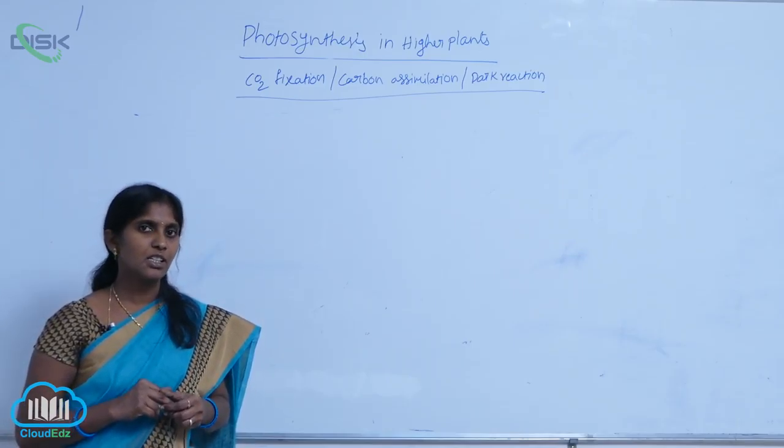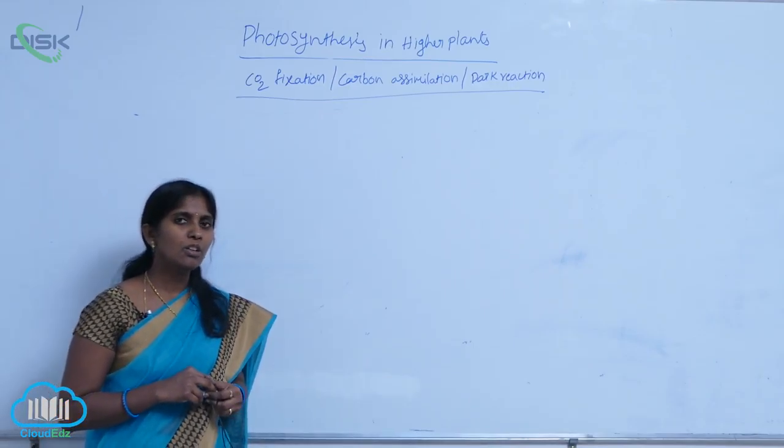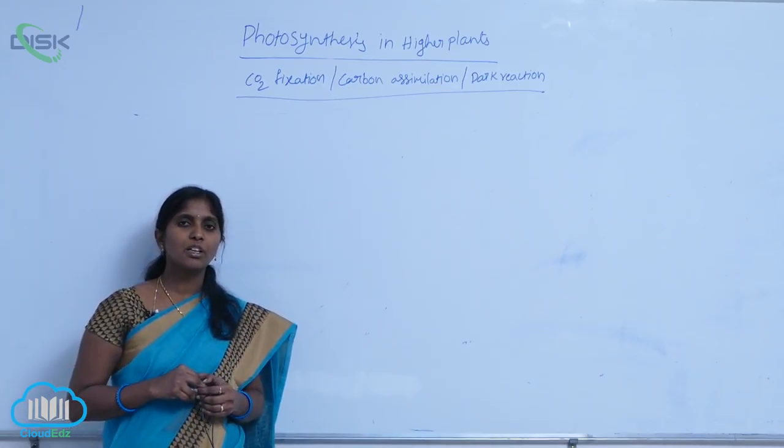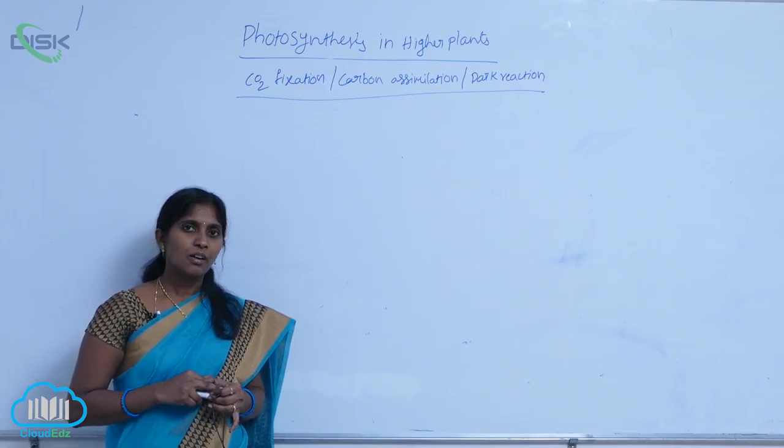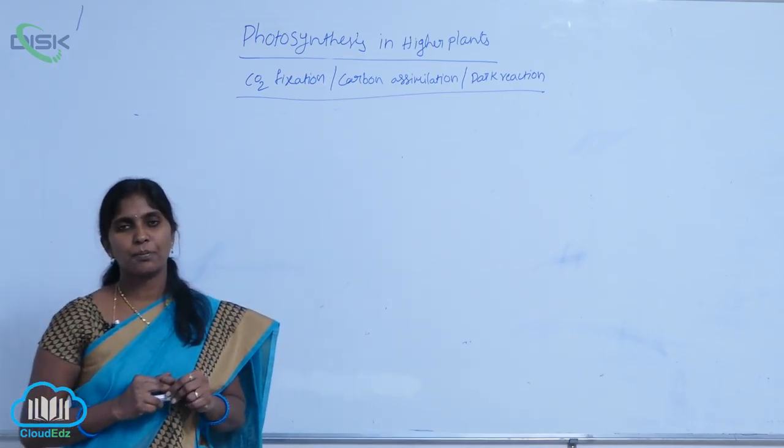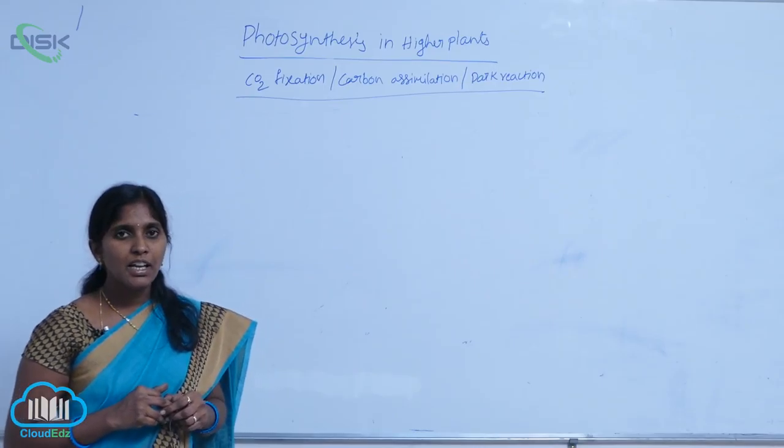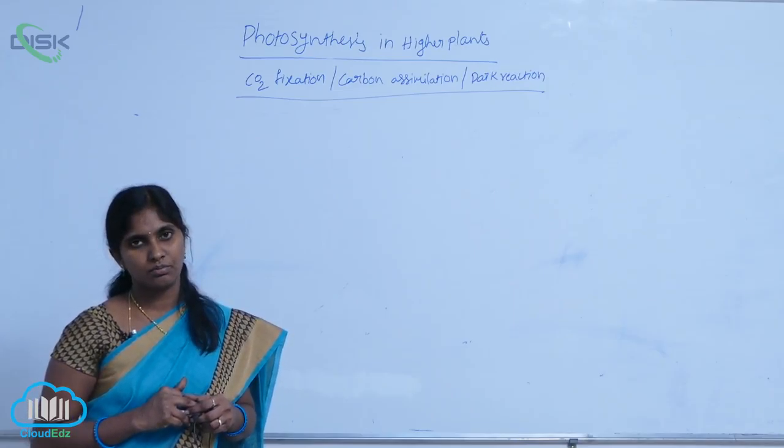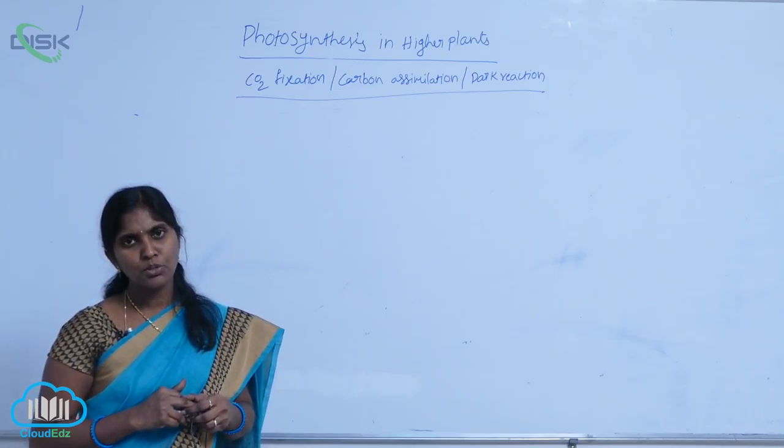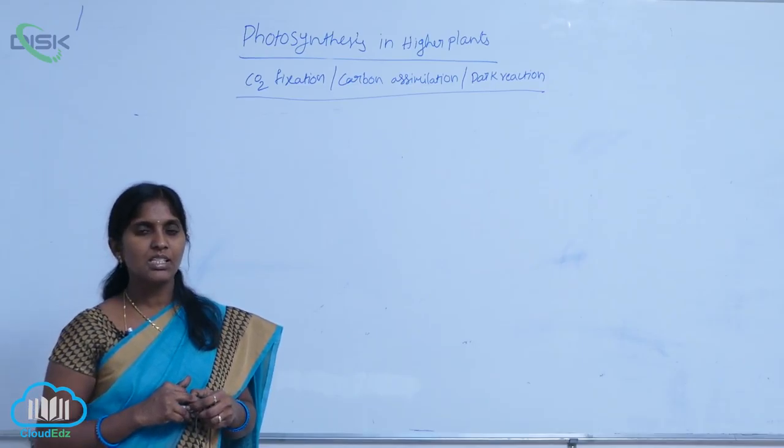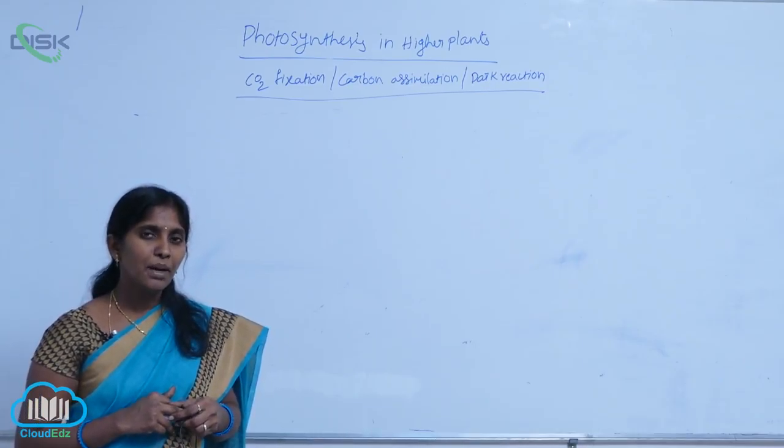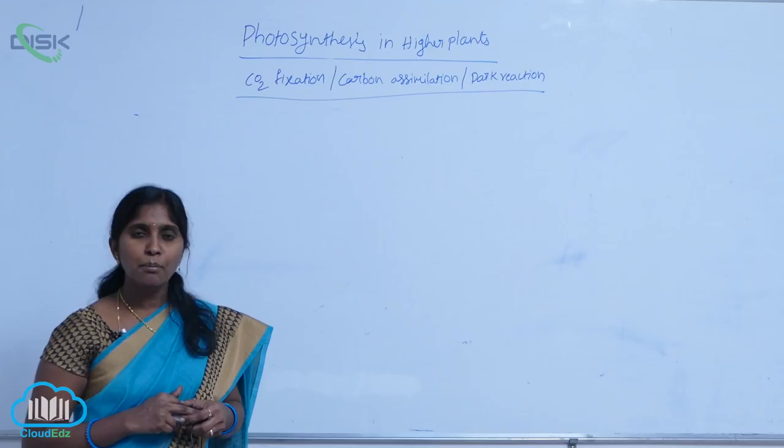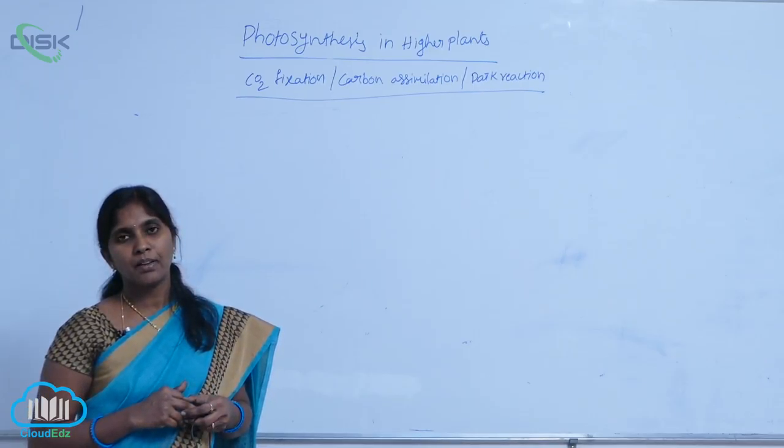However, not all plants follow the same steps in carbon assimilation during the dark reaction. Diversified carbon assimilation reactions are carried out. In most plants, the C3 cycle is carried out, but in a few plants, the first stable compound produced is different.